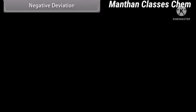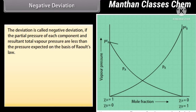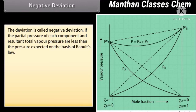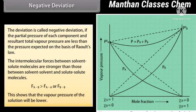Negative Deviation: The deviation is called negative if the partial pressure of each component and the resultant total vapor pressure are less than the pressure expected on the basis of Raoult's law. For example, solutions of water-nitric acid and chloroform-acetone show negative deviation. The intermolecular forces between solvent-solute molecules are stronger than those between solvent-solvent and solute-solute molecules, so the vapor pressure of the solution is lower.